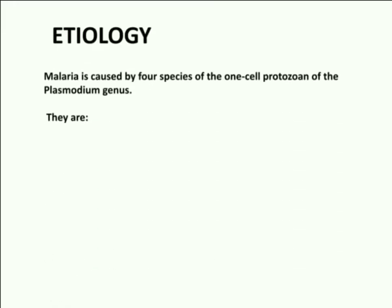Disease Etiology. Malaria is caused by four species of the one-cell protozoan of the Plasmodium. Plasmodium are a genus of parasitic protozoans of the Sporozoa that are the causative organisms of malaria. Plasmodium infects red blood cells in mammals including humans, birds, and reptiles, and occurs worldwide, especially in tropical and high-temperature zones.